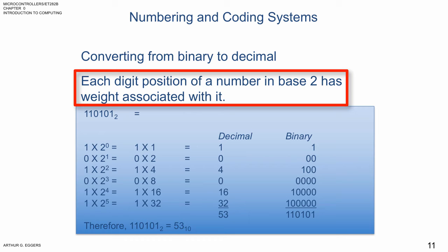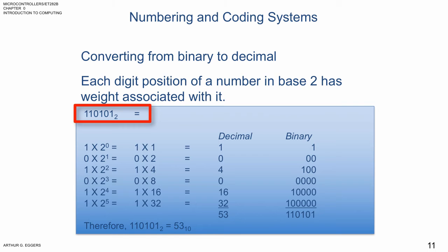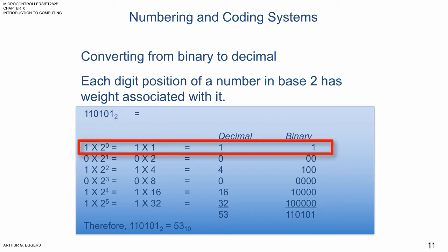Knowing the weight of each binary digit or bit in the binary number makes it simple then to add them together and get its decimal equivalent as we will see in an example here. So if we take this and take a look at it, dissect it the same way, 1, 1, 0, 1, 0, 1, base 2, and take it apart by each of its powers of 2.